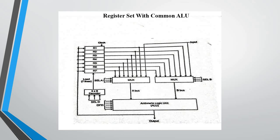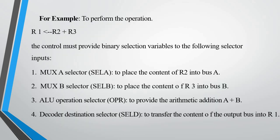For example, to perform the operation R1 = R2 + R3, the control must provide binary selection variables to the following selector inputs. First, multiplexer A selects SELA to place the content of R2 into bus A. Second, multiplexer B selects SELB to place the content of R3 into bus B. Third, the ALU arithmetic logic operation select OPR to provide the arithmetic addition A plus B.